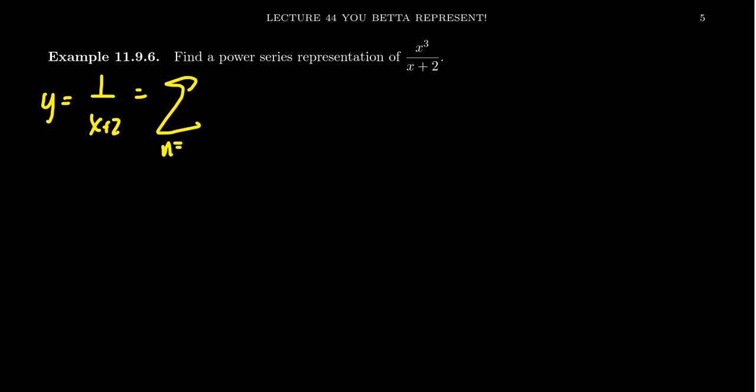This turned out to be the sum from n equals 0 to infinity of (-1)^n / 2^(n+1) times x^n, like we did there. So we can do the power series representation if there wasn't an x³ in there.